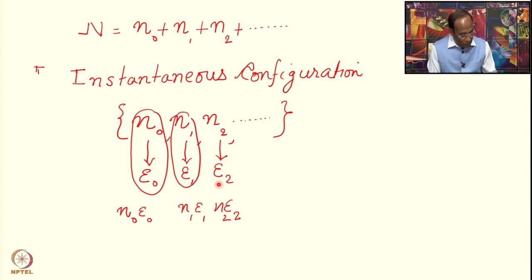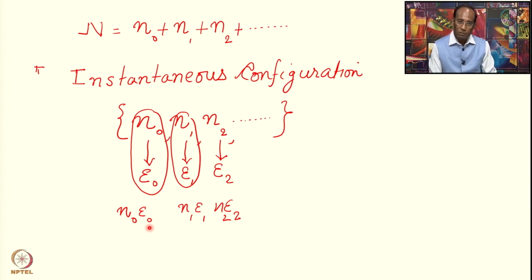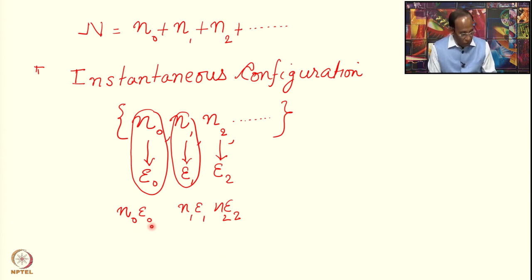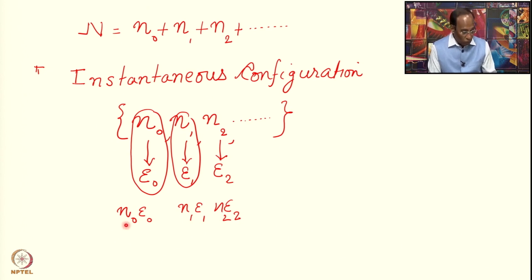When we talk about N0 times E0, recall from the previous lecture that we set the ground state energy E0 equal to 0. Therefore, the contribution N0·E0 is zero. The energy from the first excited state is N1·E1, from the second is N2·E2, and the total energy is the sum of all these contributions.